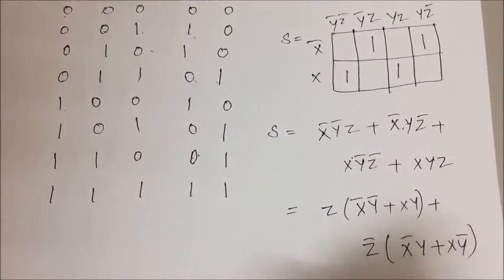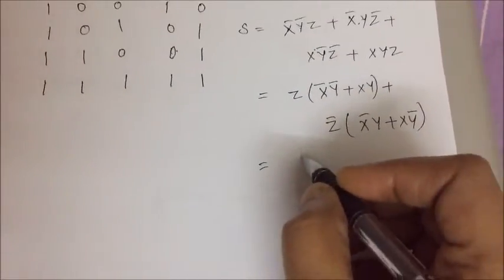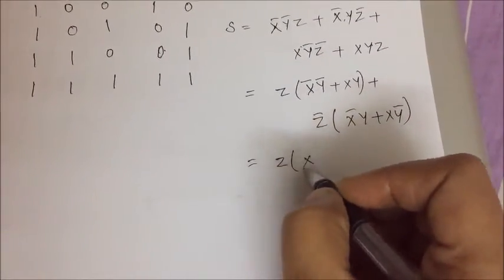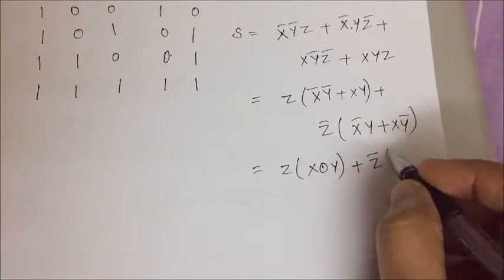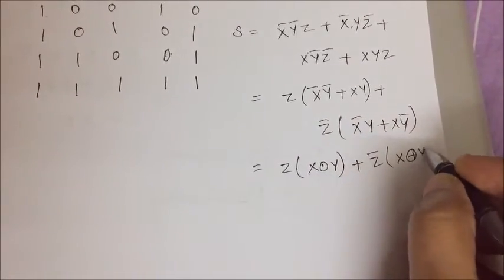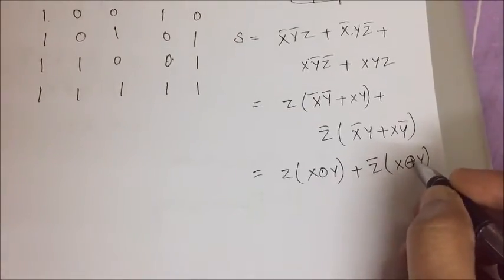Now if you see this one, we will have x x-nor y plus z bar, x x-or y.